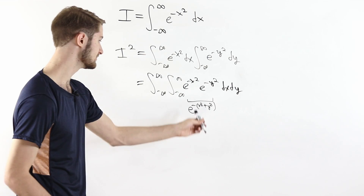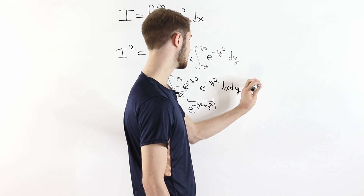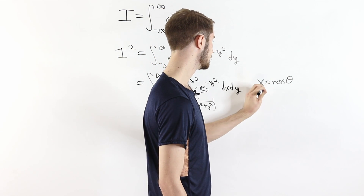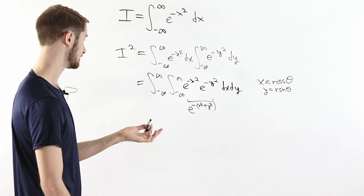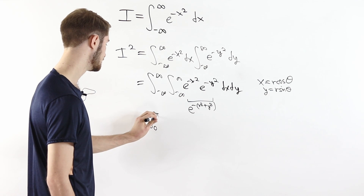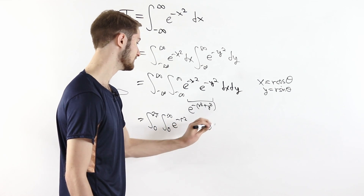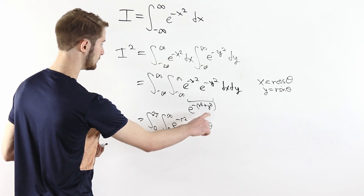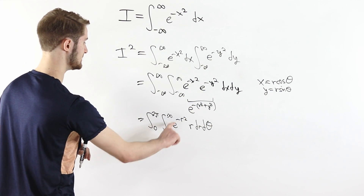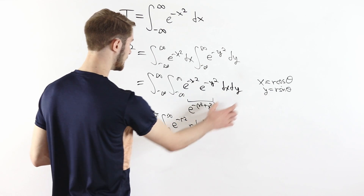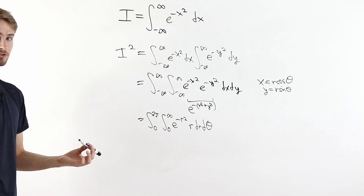The key is that we can combine e to the minus x squared times e to the minus y squared into e to the minus x squared plus y squared. So we've written the entire integral in terms of x squared plus y squared, and from here we can do a polar coordinate substitution: x equals r cosine theta, y equals r sine theta. Multiplying by the Jacobian r, the integral becomes the integral from zero to two pi of the integral from zero to infinity of e to the minus r squared times r dr d theta.